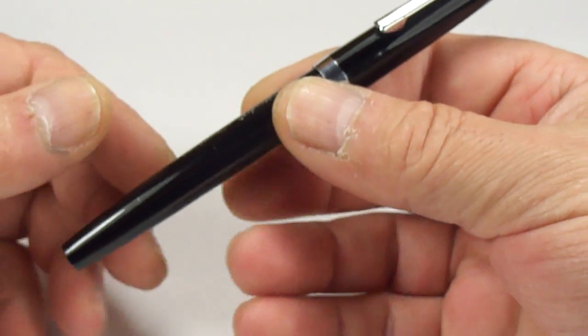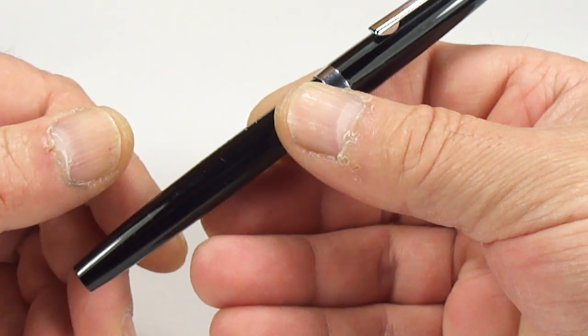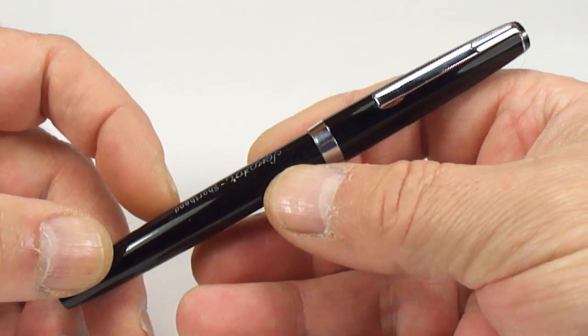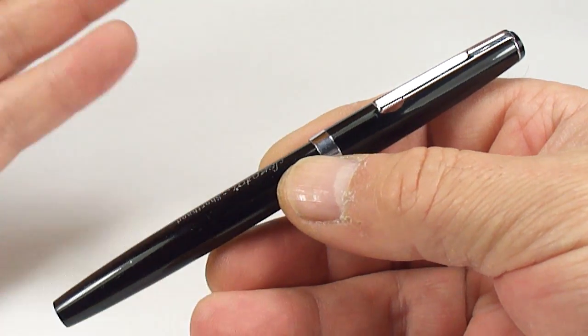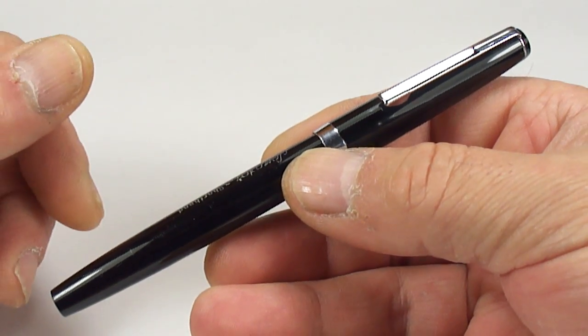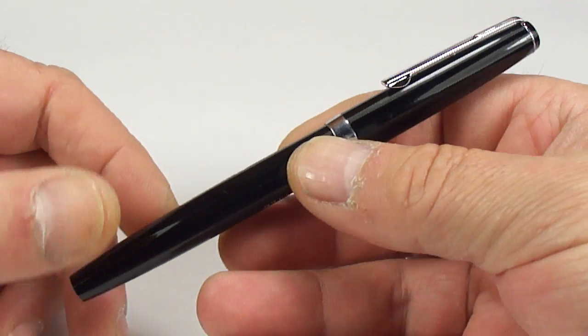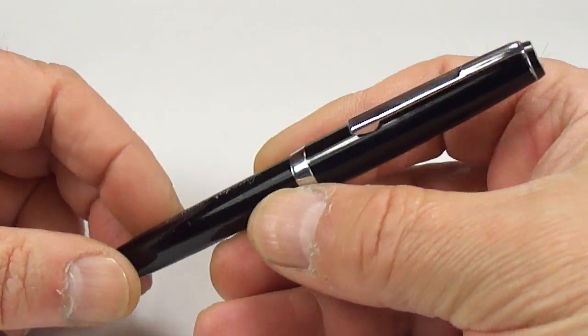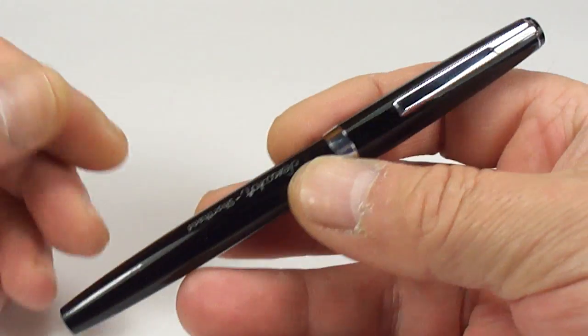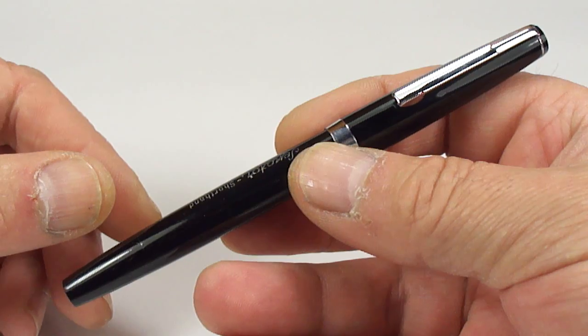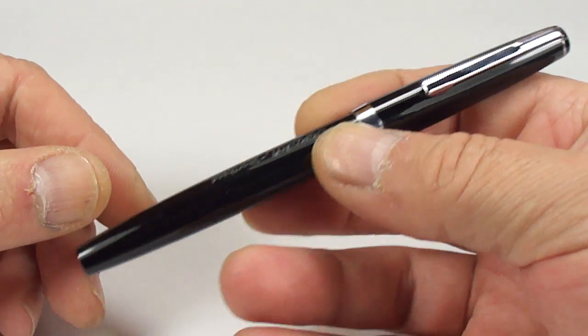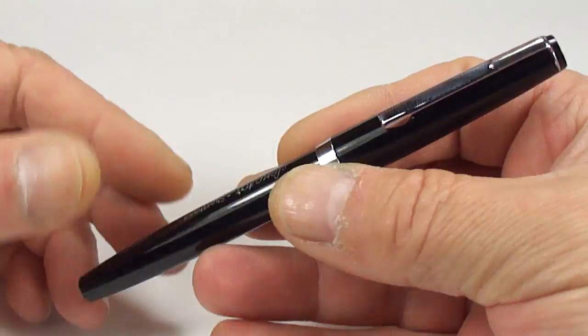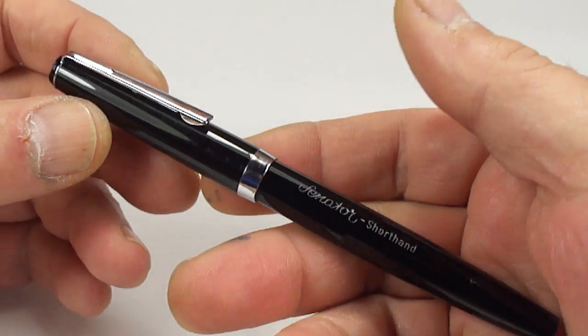The Senator is a range that was made by a company called Mertz & Krell from Germany. The Mertz & Krell were making pens from around about the 1920s. I believe they made pens for Pelican as well, so they seem to know what they're doing or what they were doing. But this one is one of the Senator range. Now, they made lots of different variants of the Senator range.